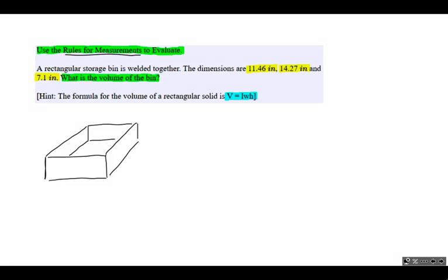So let's go ahead and diagram this storage bin and maybe put some dimensions to it here. It doesn't really say length, width, or height, which one's which. But I've labeled it here with a height of 7.1 and a width of 11.46 and maybe a depth or a length of 14.27.